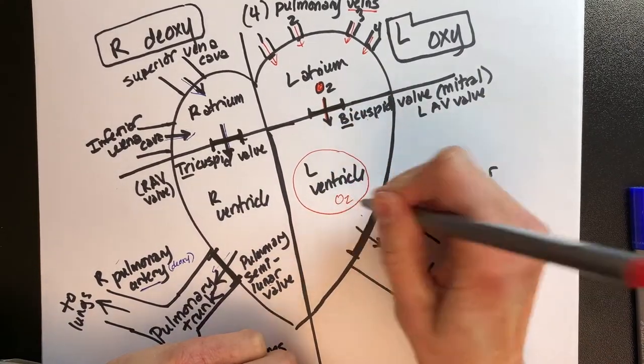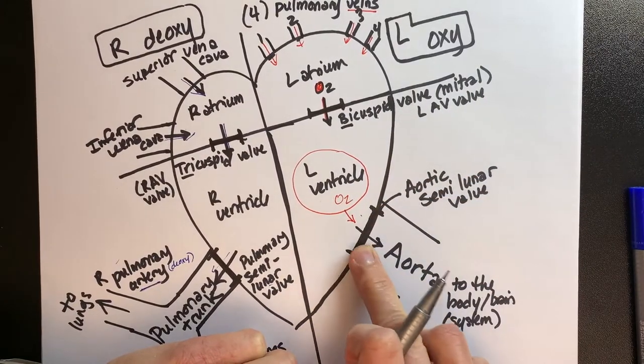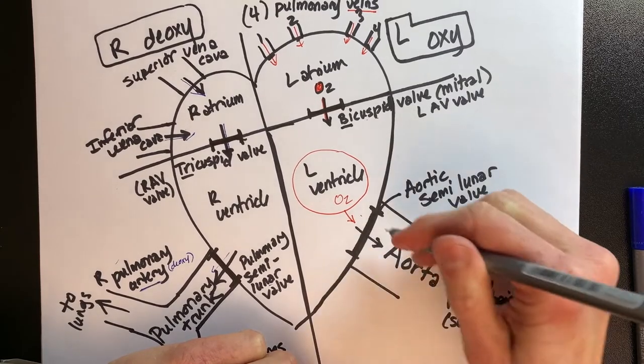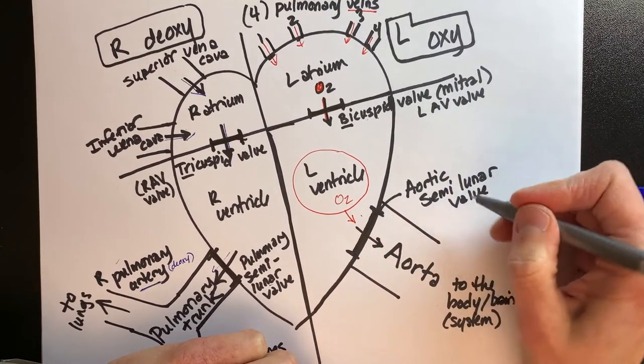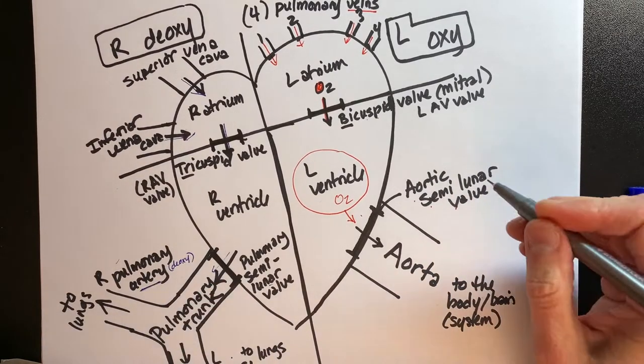We have lots of oxygen. We need to get that oxygen out to the body. So we're going to go out the aorta. In order to get to the aorta, we're going to pass through a door called the aortic semilunar valve, which is just like the pulmonic semilunar valve.